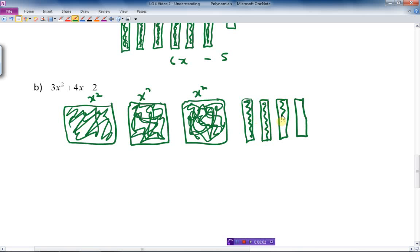And lastly, I have minus 2. There's no x's there. I'm just going to put little cubes, two of them. And they're hollow. I'm going to leave them white because they're minus. So this gives me 3x squared plus 4x minus 2.